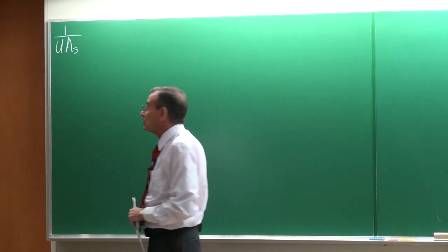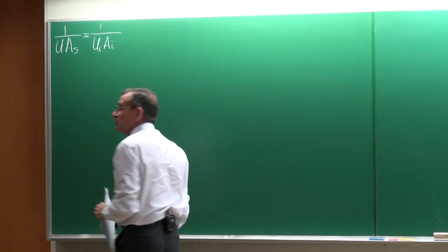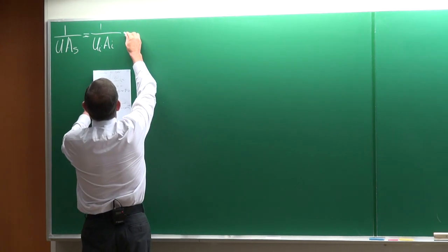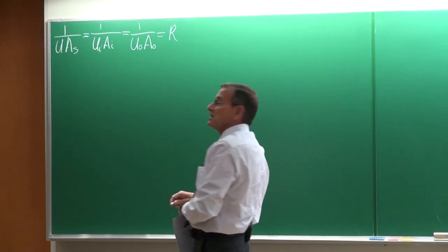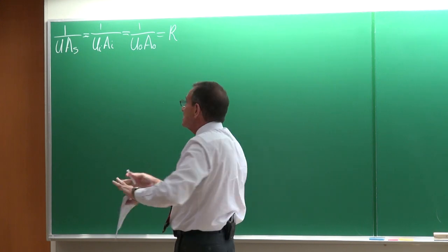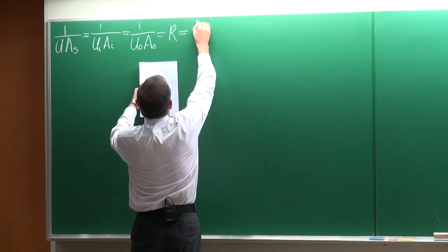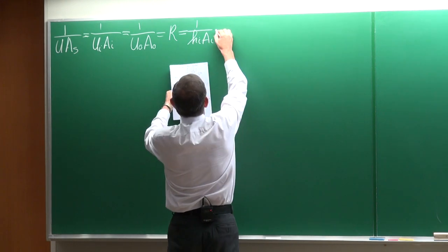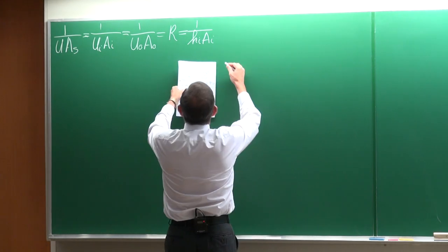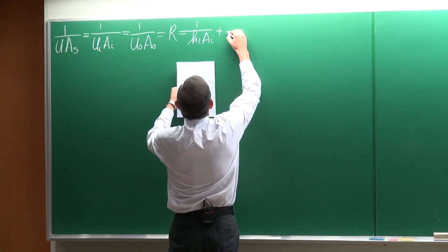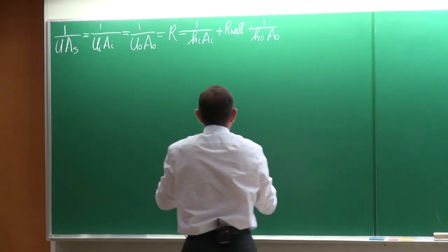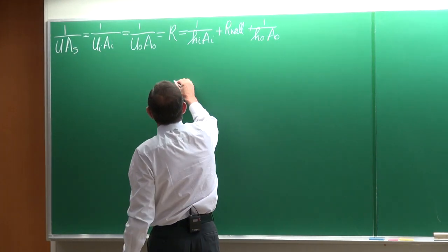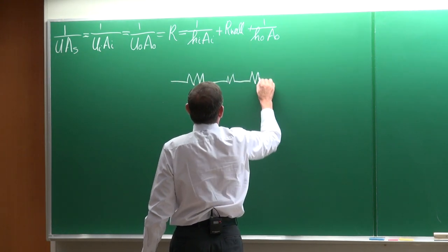So it says 1 divided by the overall heat transfer coefficient multiplied by the surface area. We can write it based on the area on the inside or on the outside of heat transfer. And 1 divided by UA is equal to the thermal resistance — the thermal resistance from chapter 3 in the previous module. You can write that in resistance terms as 1 divided by the heat transfer coefficient multiplied by the surface area, plus the resistance of the wall.